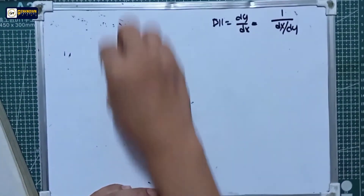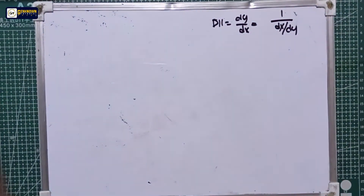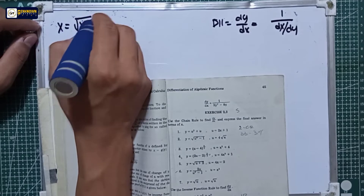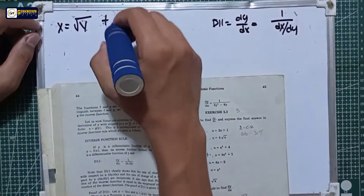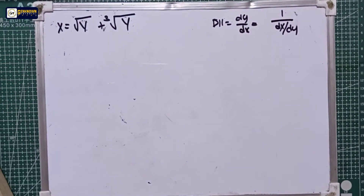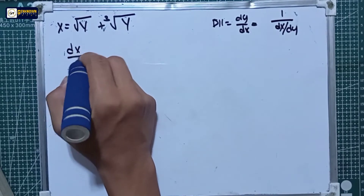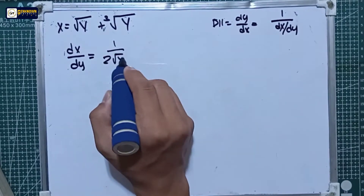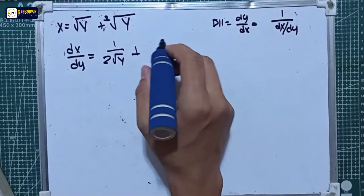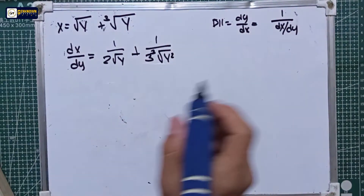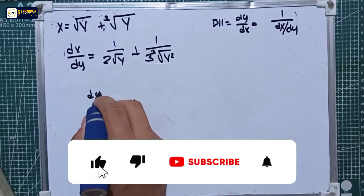For number two, which is number nine in the book, we have x is equal to the square root of y plus the cube root of y. We will derive this x function with respect to y. So dx over dy is equal to: derivative of square root of y is 1 over 2 square root of y, plus derivative of cube root of y is 1 over 3 cube root of y squared.